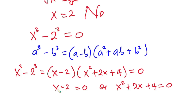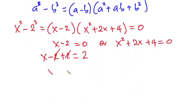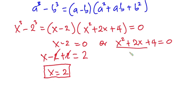So at this point, we can say that x minus 2 equals 0, or x squared plus 2x plus 4 equals 0. Tackling the first: x minus 2 equals 0, so adding 2 to both sides gives x equals 2. This is one of the valid solutions. Now let's come to the quadratic equation.